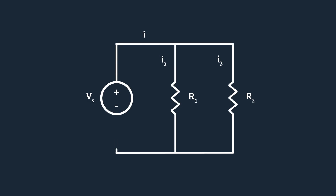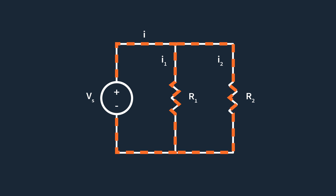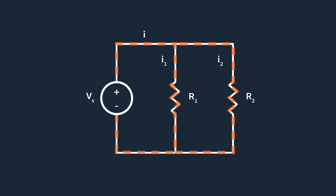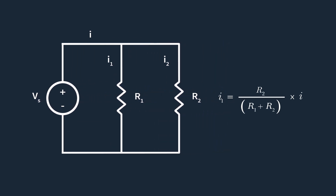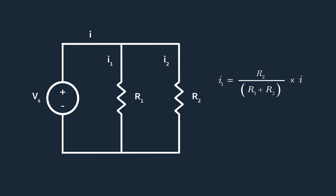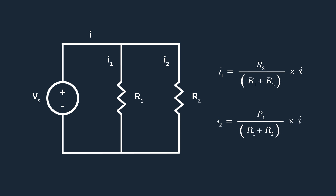For a parallel combination of N resistors, the branch current I sub k through the kth resistor is given by the current divider equation, where I is the total current. In parallel circuits, the total current is divided among the individual resistors, with larger current flowing through the branch with smaller resistance. For two parallel resistors, I1 equals R2 divided by the sum of R1 and R2, multiplied by the total current. Similarly, I2 equals R1 divided by the sum of R1 and R2, multiplied by the total current. Note that the current through R1 is calculated by putting R2 in the numerator.